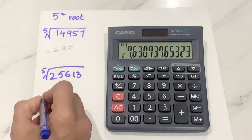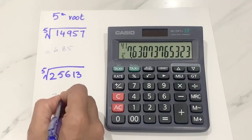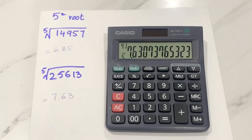So, my answer is here. It's 7.63. The fifth root of 25,613.